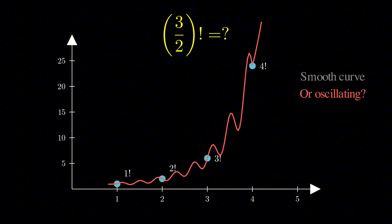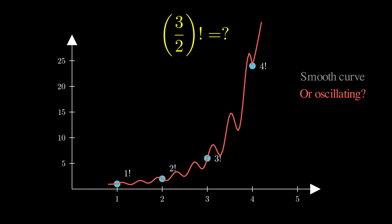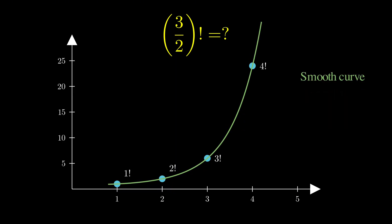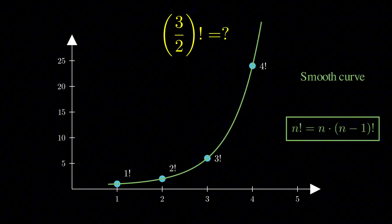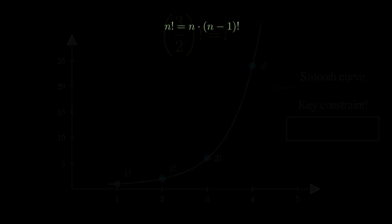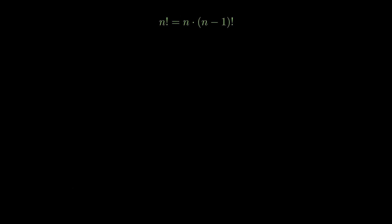So we need some extra constraint to pick the right curve, and this is where the magic happens. The factorial function has this beautiful property, n factorial equals n times n minus 1 factorial, and we want our extended function to preserve this relationship not just for integers, but for all values. When you enforce this recursive property, along with something called log convexity, you get exactly one curve that fits.